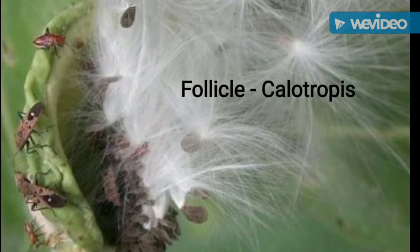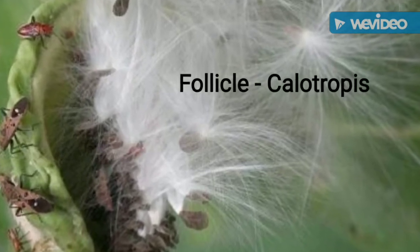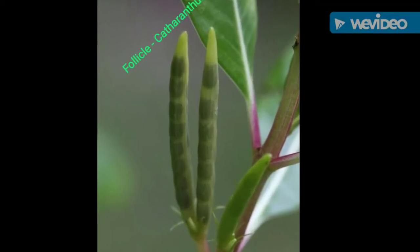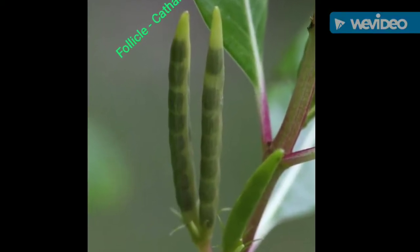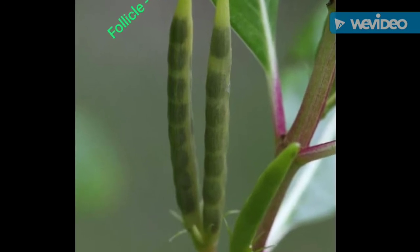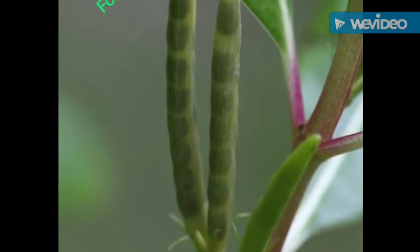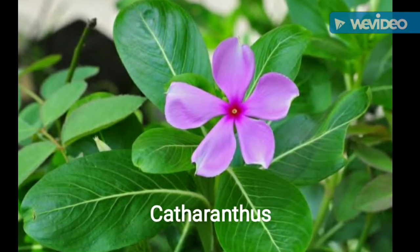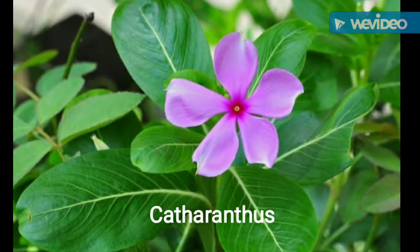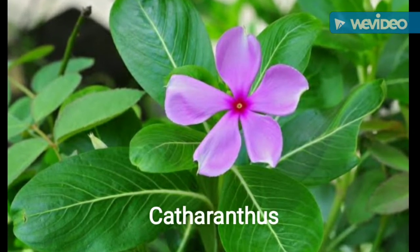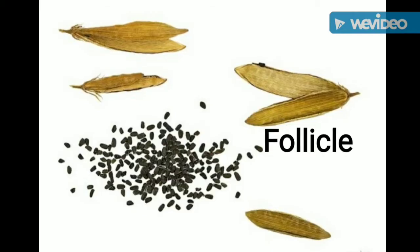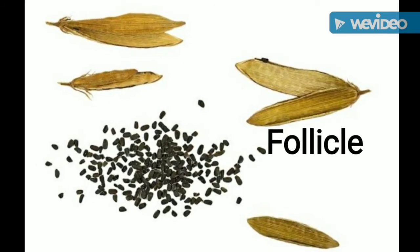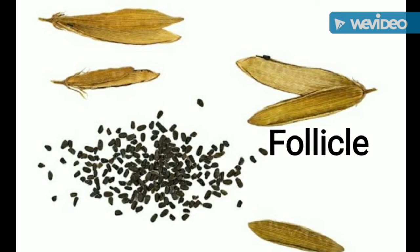A white hairy tuft is present, because of which the seeds are easily spread out. Calotropis gigantea. This one is Catharanthus roseus. The fruit is also one of the follicle fruits. Catharanthus roseus is highly used in the Ayurvedic and medicinal field. The follicle fruit breaks down along one suture only.